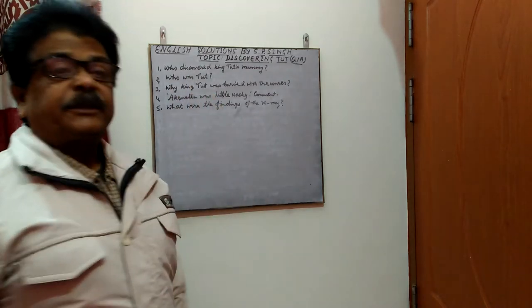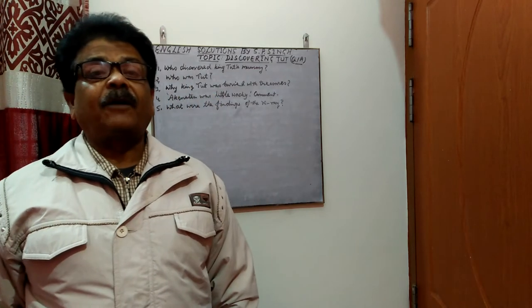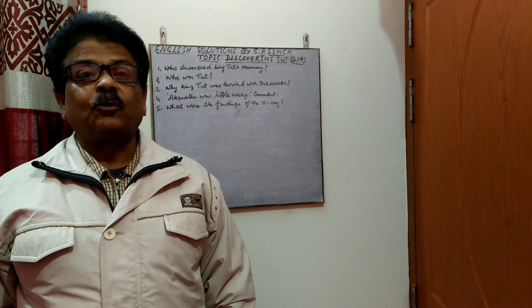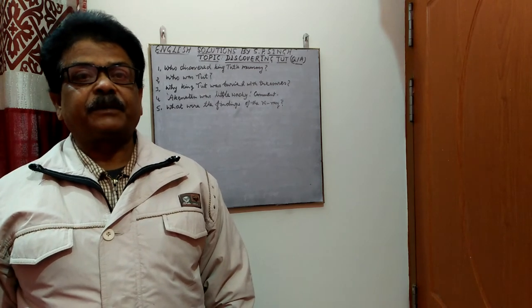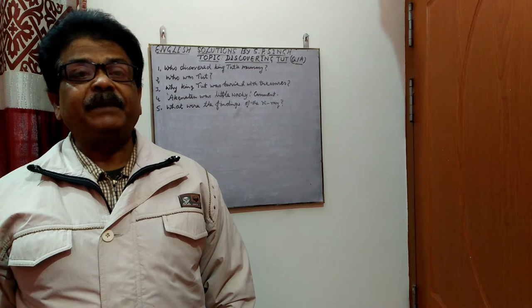Second question is, who was Tut? Tut was the last heir of a powerful dynasty which ruled in the golden era of ancient Egypt, and he died untimely.